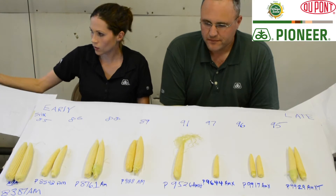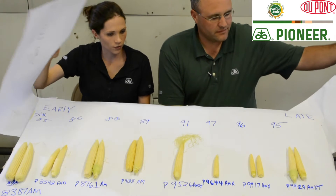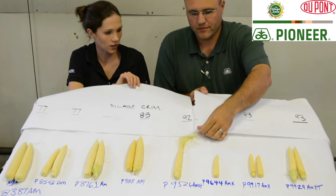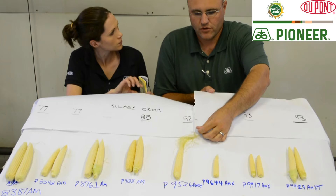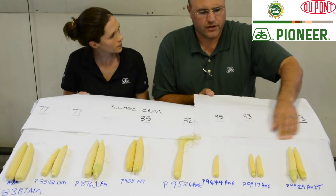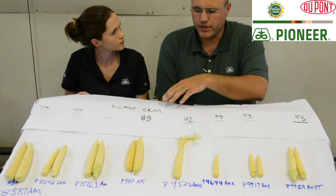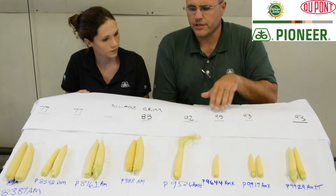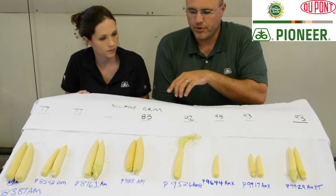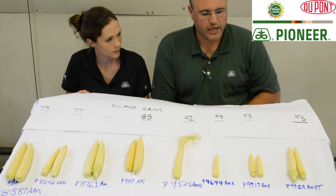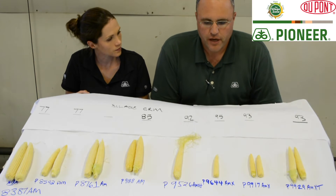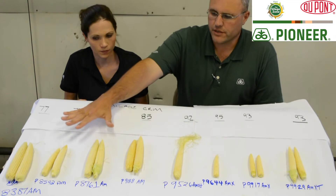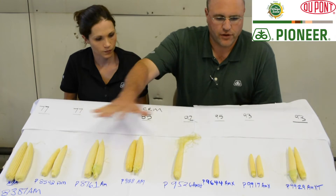So when we think about corn silage, what does that mean for us Matt in terms of selecting silage products? When you think of ear development, how does that relate to tonnage? A lot of times when we look at our silage maturities we'll see a different maturity based from the grain maturity to the silage maturity. You can see the difference of how they line up here across the top where we put down the silage maturity on all these products, and you can see that these are a lot farther along than the later ones.